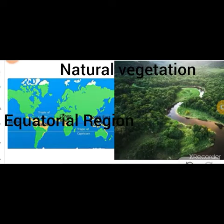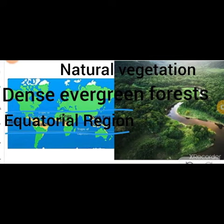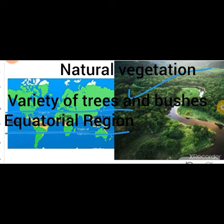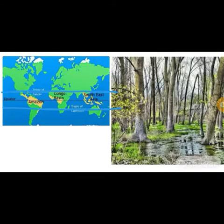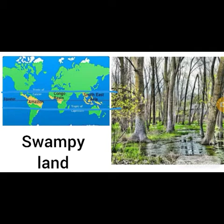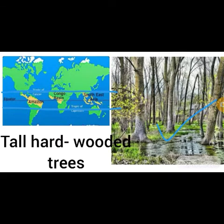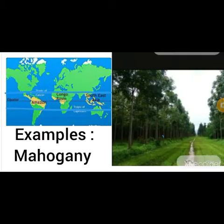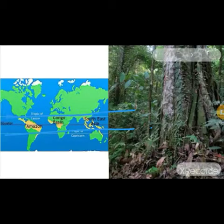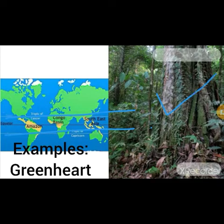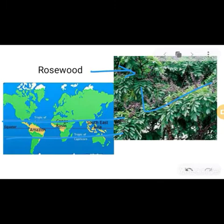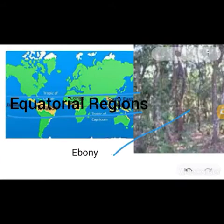The natural vegetation in this equatorial natural region consists of dense evergreen forests. There are a variety of trees and bushes, swampy land, and tall hardwooded trees. For example, mahogany, greenheart, rosewood, and ebony are types of trees found in the equatorial natural region.